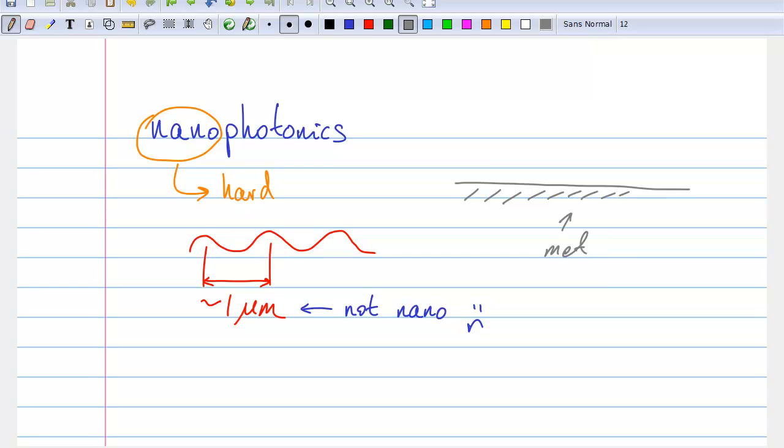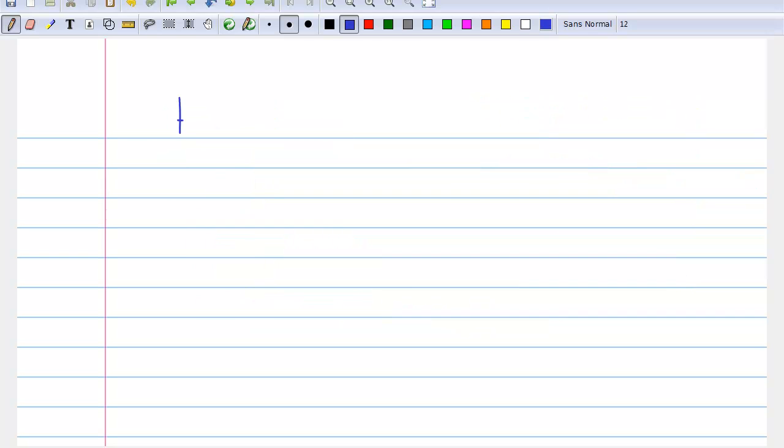Metals offer a potential solution to this. The wavelength of light, as it propagates along the surface of a metal, is in the nanometer range. But light cannot penetrate inside the metal, and it is also typically quickly absorbed.